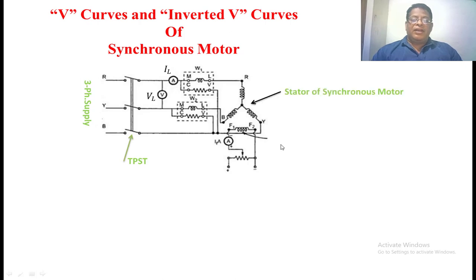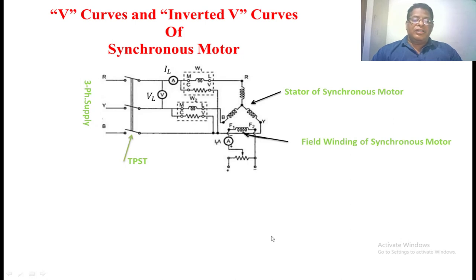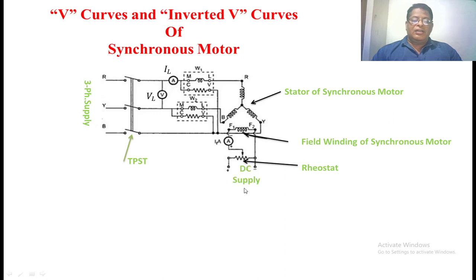This is the stator winding of the synchronous motor. This is the field winding of the synchronous motor. For the field winding we have to apply a regulated DC voltage, which is why we have kept one rheostat in a potential divider mode. Here we have kept one ammeter to measure the field current, and here we have given the DC circuit.